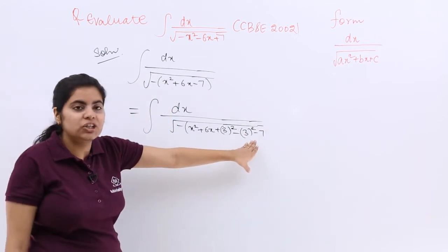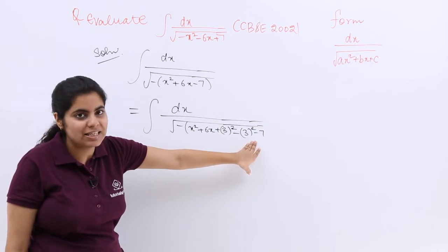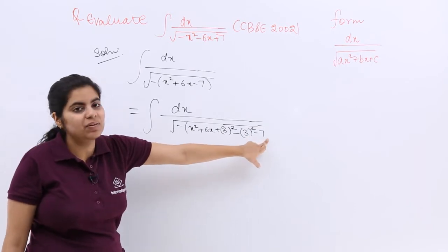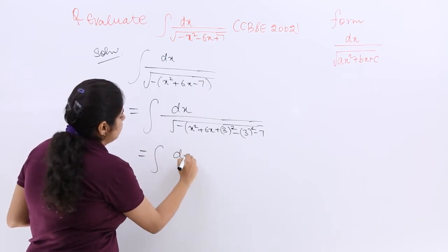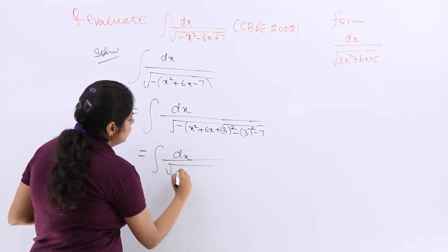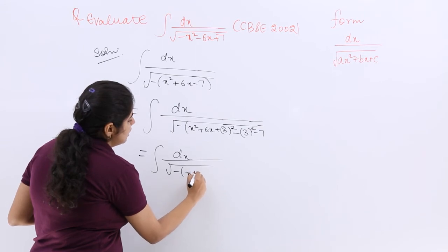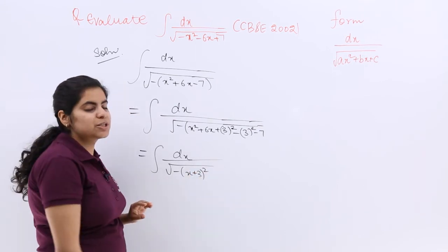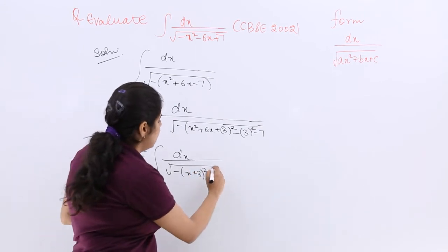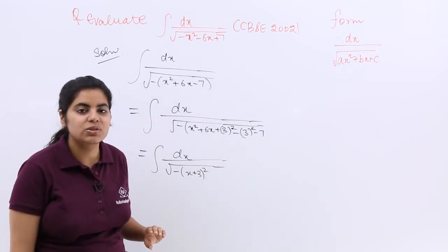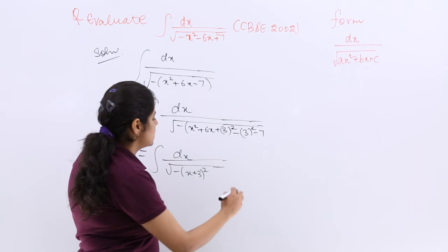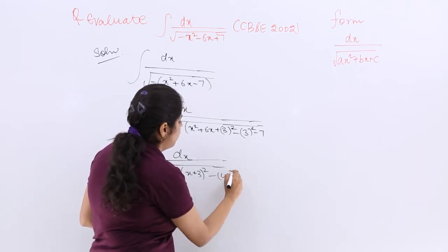Now 3 square is 9 here also, 3 square is 9, only the signs have to be changed. So 9 and 7 makes it 16, definitely it will work. So I write here dx upon under root minus, let's make the whole square: x plus 3 whole square, then again you have minus 9 minus 7, so it is minus 16 which is nothing but minus 4 square.